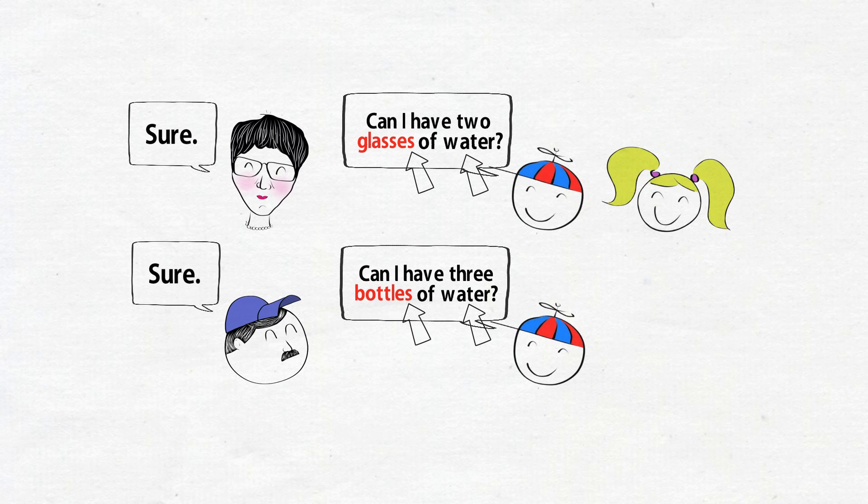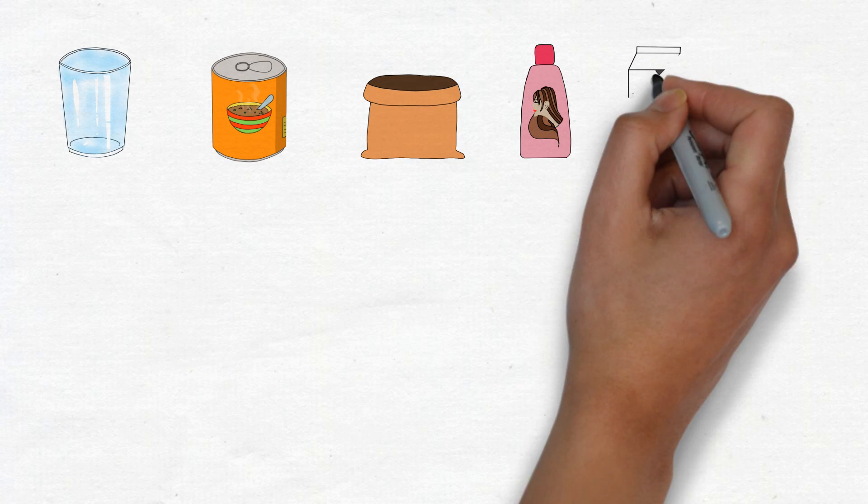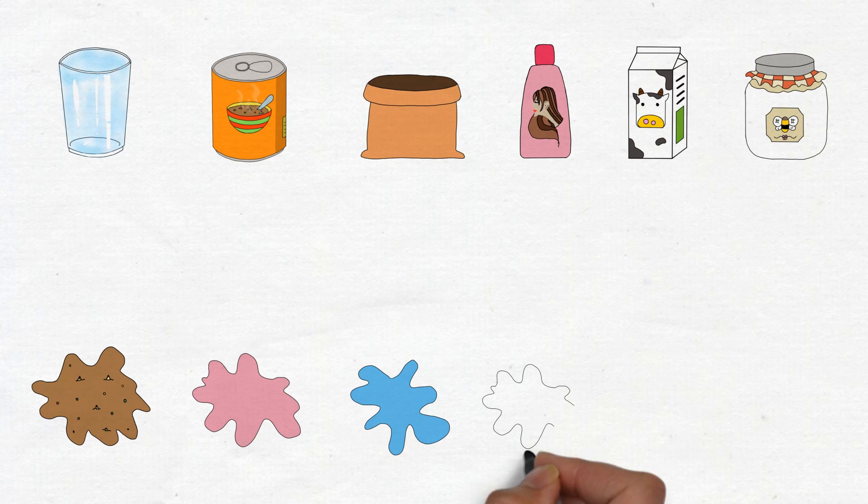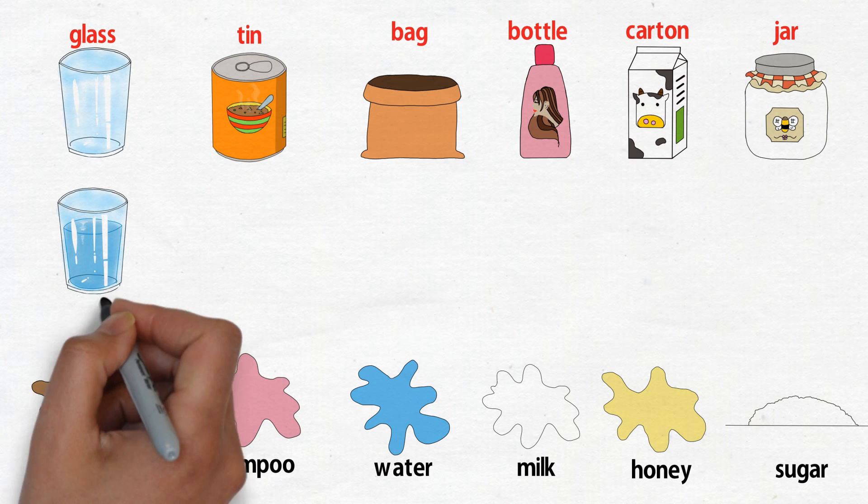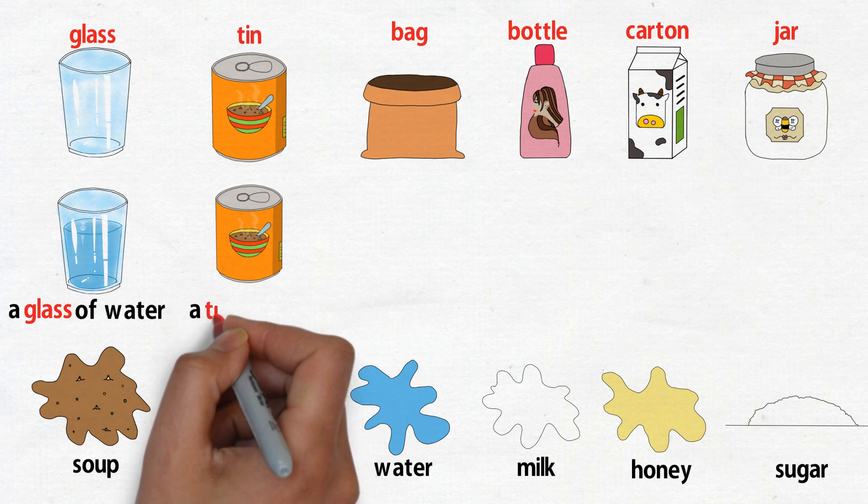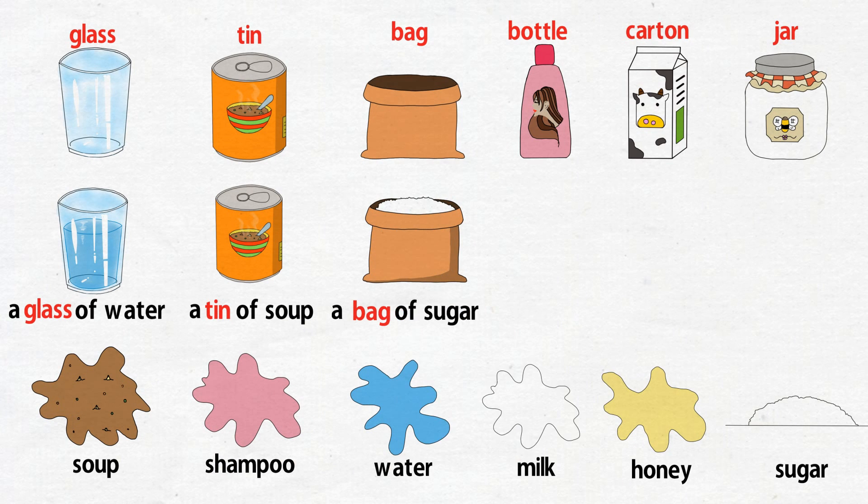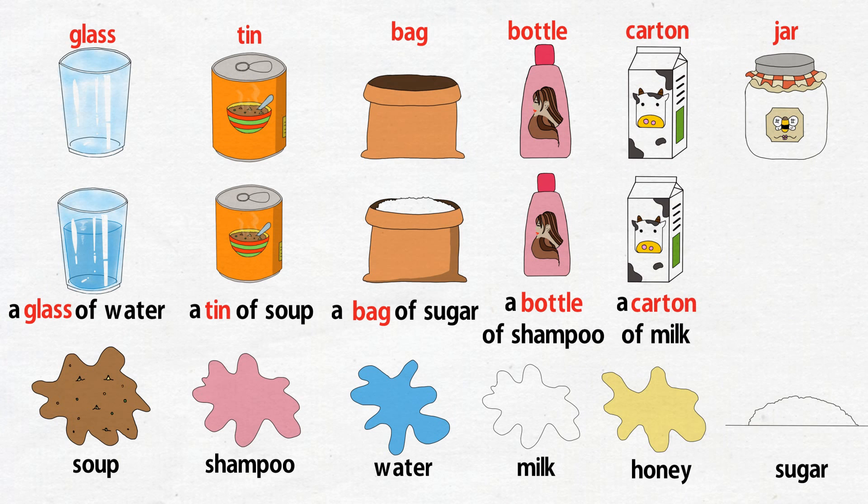You have to stop the video and connect these uncountable nouns with their containers. Let's see if we have the same answers: a glass of water, a tin of soup, a bag of sugar, a bottle of shampoo, a carton of milk, a jar of honey.